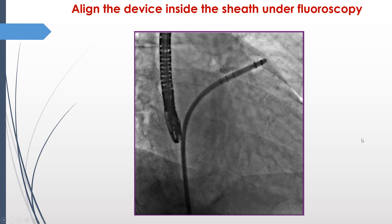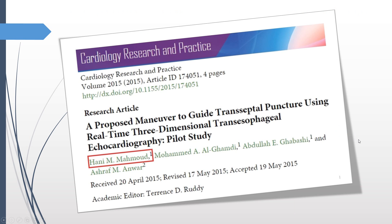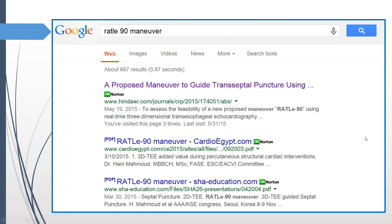This is after septal puncture from the right atrial side — superior vena cava here, inferior vena cava here, and the septum is punctured by the catheter. If you rotate the image 180 degrees to see the septum from the left atrial perspective, you will see the catheter facing you. This is how the view looks in fluoroscopy — you can only see the catheters and metals, and will not see the septum at all. We have already published this maneuver in the Journal of Cardiology Research and Practice, titled 'A Proposed Maneuver to Guide Transseptal Puncture Using Real-Time Three-Dimensional Transesophageal Echocardiography' — a validation study by myself and my colleagues.